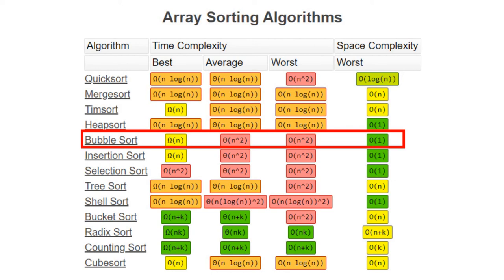The best case is Ω(n) which is better compared to other algorithms, but you might not always have the list in a sorted order. The space complexity is O(1) which is great compared to other algorithms, because Bubble Sort is going to use only one constant variable to help in swapping the elements.